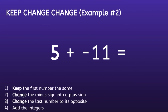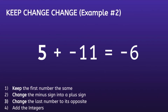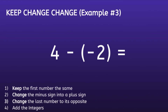The final step is to add the integers: five plus negative eleven is equal to negative six. Moving on to the third and final example: four minus negative two. Step one is to keep the first number the same. Step two is to change the minus sign into a plus sign. Step three is to change the last number to its opposite — the opposite of negative two is positive two.